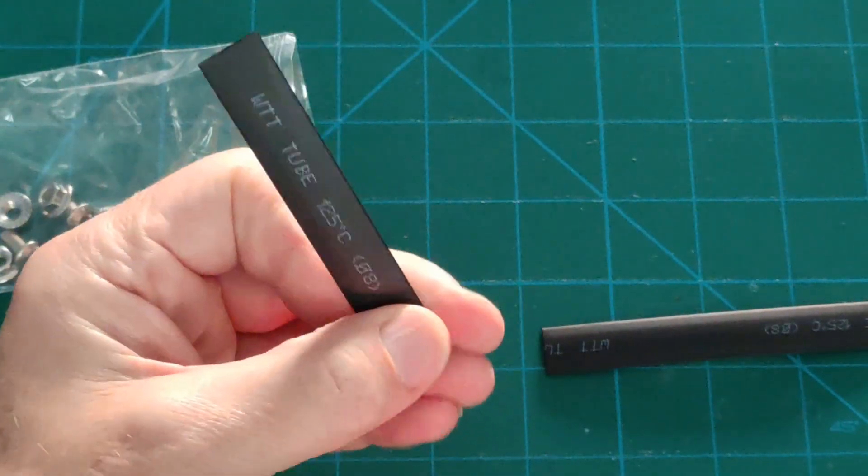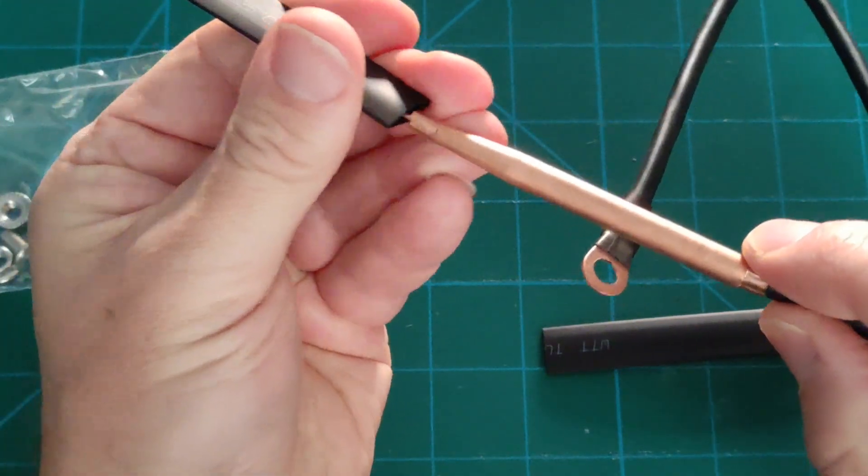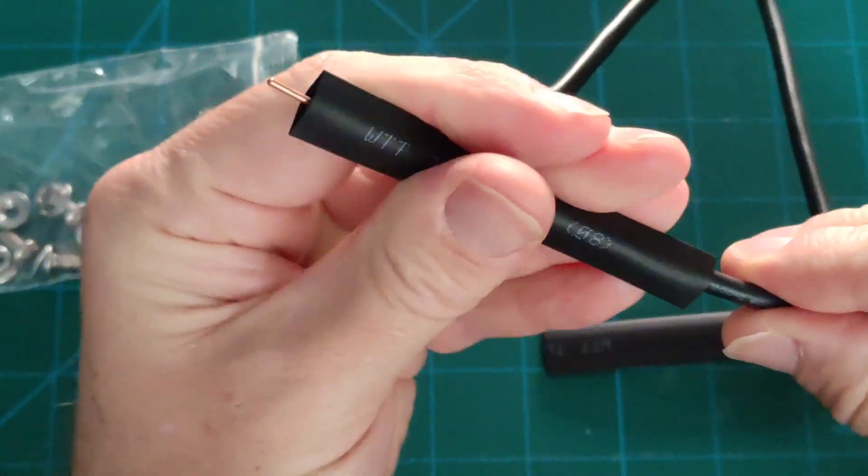And some heat shrink tubing for the probes because you don't want to be holding on to those when it's whacking a huge amount of current through them. I'll probably put a second layer on them.